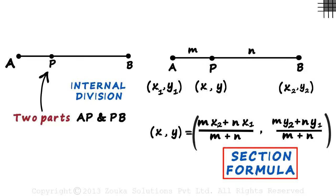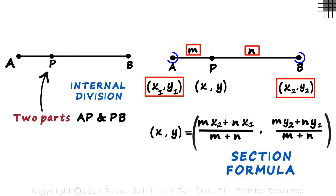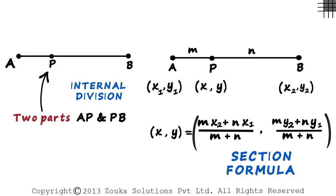The section formula helps us find the coordinates of a point on a line, provided we are given this ratio and the coordinates of the endpoints. The derivation in time otis is quite simple.